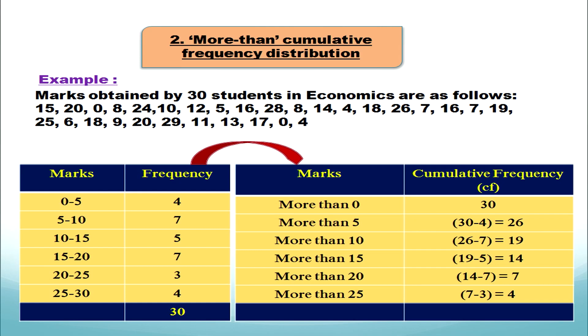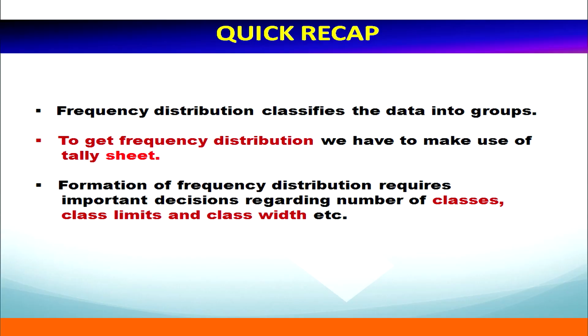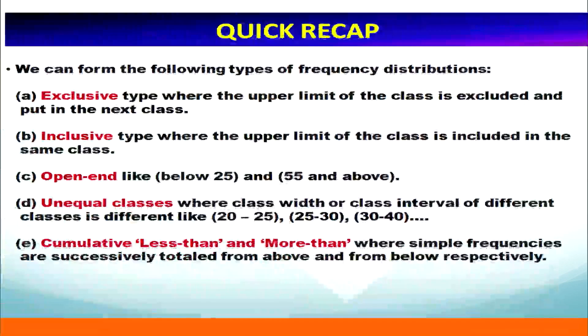To recap: we have learned about frequency distribution which classifies data into groups, and how to convert between series types — inclusive to exclusive, exclusive to cumulative frequency distribution. We covered class, class limits, class widths, and discussed all five types in detail: exclusive series, inclusive series, open end, unequal classes, and cumulative less than and more than. Thank you.